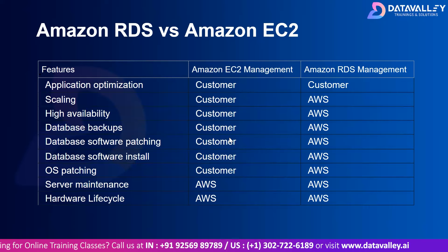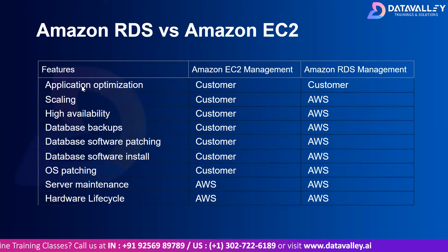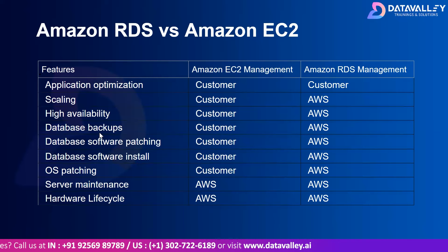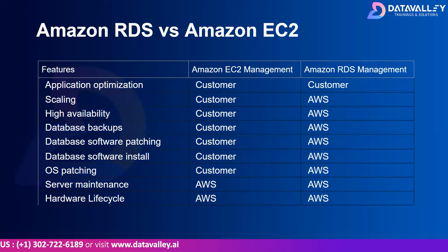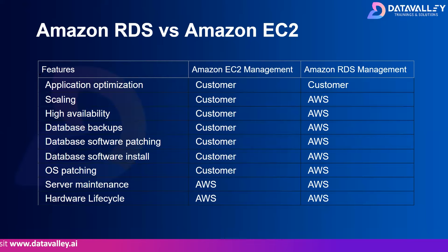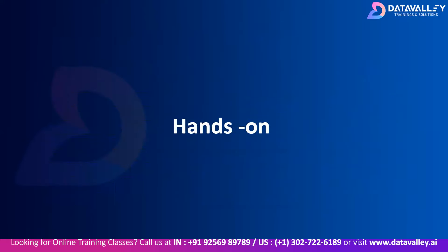Considering all these features, we should prefer RDS over EC2 because scaling, high availability, database backups, software patching, software installs, and OS patching are time-consuming and operationally expensive tasks. Having all these managed by AWS is a great relief, allowing us to focus directly on our application and how it accesses the database. This is why configuring RDS instances over EC2 instances is recommended.